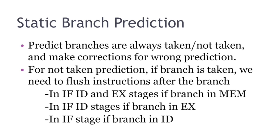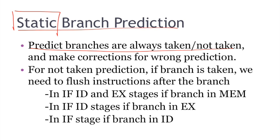So there are two types of branch prediction. One is static branch prediction and another one is dynamic branch prediction. By the name static, we can know that this type of prediction will always predict the branch as taken or not taken, and you will make corrections for the wrong prediction.